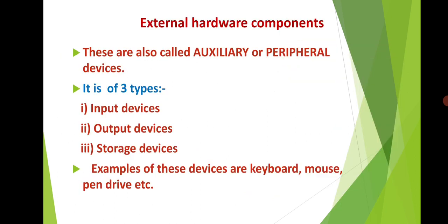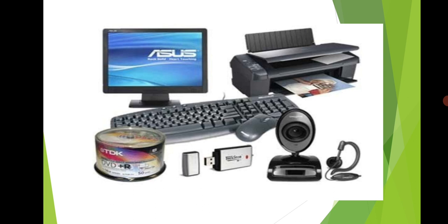Now we will study about external hardware components. These are also called auxiliary or peripheral devices. Now these are basically categorized into three types: input devices, output devices, storage devices. Examples of these are keyboard, mouse, pen drive, etc. In this slide you can see different auxiliary or peripheral devices like keyboard, web camera, printer, monitor, etc.